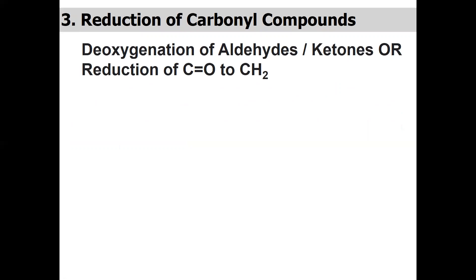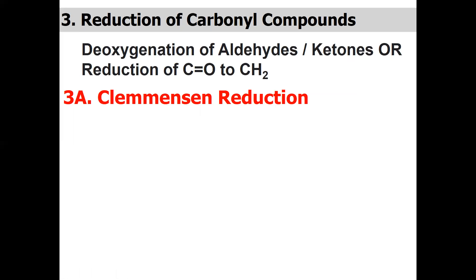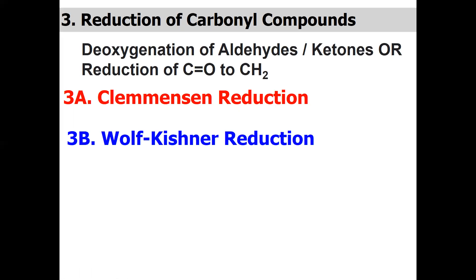The third reaction to synthesize alkane is the reduction of carbonyl compounds, which can also be called deoxygenation of aldehydes or ketones, or the reduction of a carbonyl to a CH₂ group. As discussed, we have three methods to convert carbonyl compounds into alkane: the first is Clemmensen reduction, the second is Wolff-Kishner reduction, and third is the Mozingo reduction.